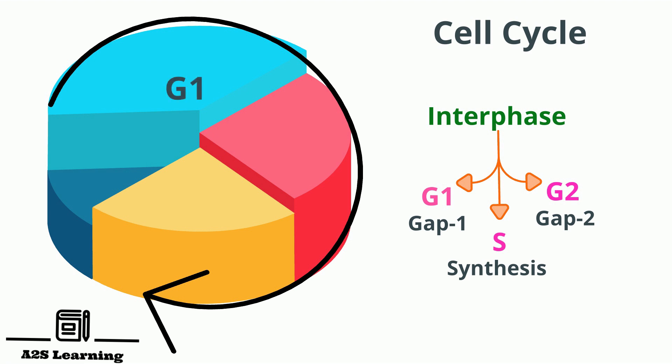This cycle begins with G1 phase which lasts for 8 to 10 hours. During this phase, the cell is metabolically active and continuously grows but does not replicate its DNA.